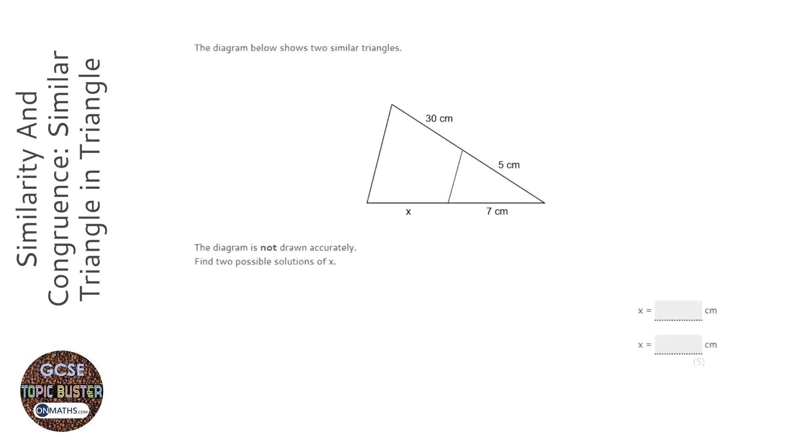Okay, so this question seems really easy at first but there's a bit of a gotcha in it. The first thing I'm going to do is calculate the total length of this line here. That's going to be 35 centimeters and the other one will be x plus 7.